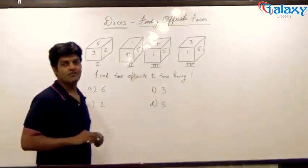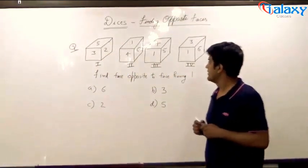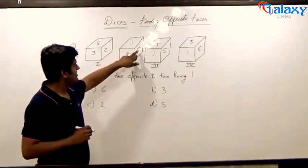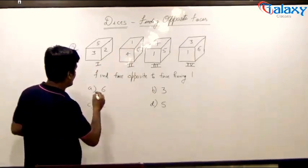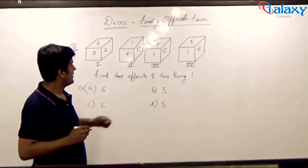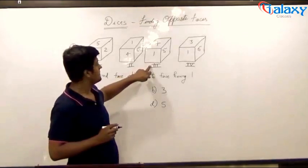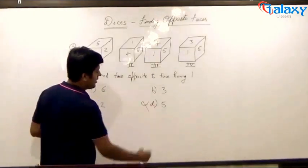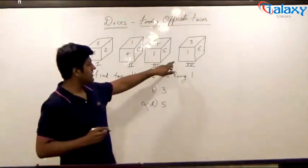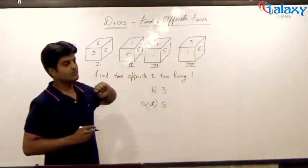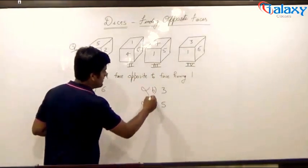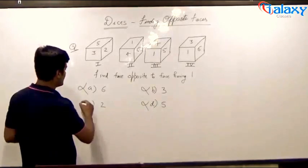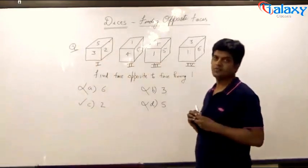Rule number one says that the faces which are adjacent cannot be opposite to the given face. In position number two, four and six are adjacent to one — hence we can eliminate option A. In the third position of the dice, four and five are shown to be the adjacent faces to one — hence we can also eliminate option D. In the fourth position of the dice, three and six are adjacent faces — hence we can eliminate option B. Using rule number one and the method of elimination, we can arrive at the right answer, that is two — the face which is opposite to the face having digit one.